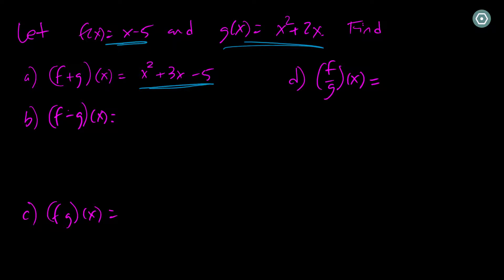So f minus g of x is just simply taking x minus 5 and subtracting x squared plus 2x. That's just f of x minus g of x. So now we just need to clean up and get our common terms. So we have a negative x squared, we have a minus 2x plus x, so it would give me a minus 1x and then a minus 5. There's my f minus g of x.